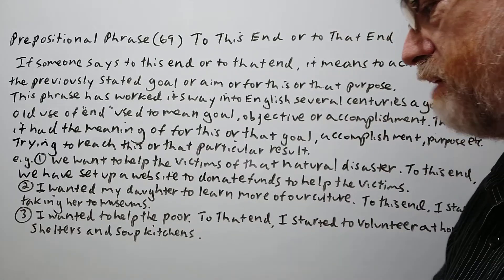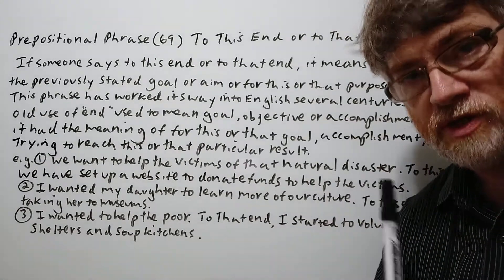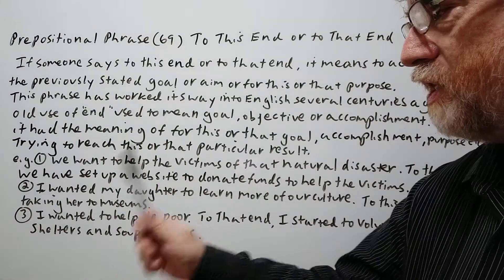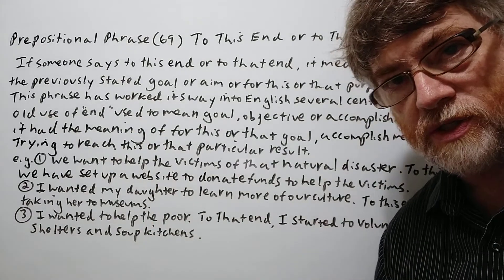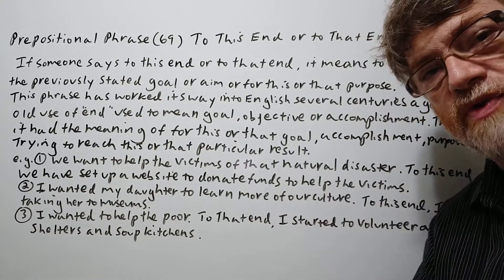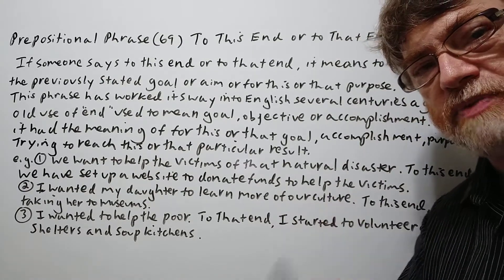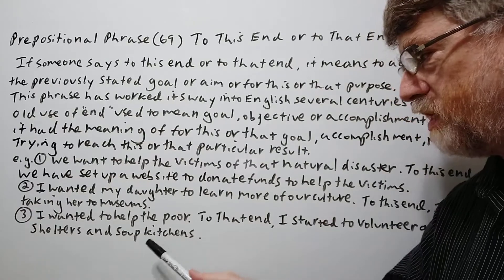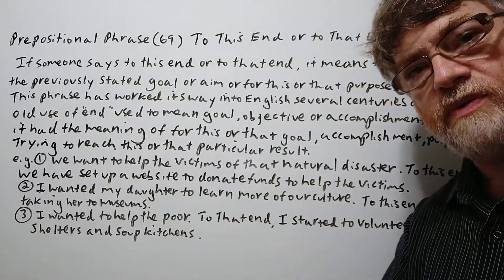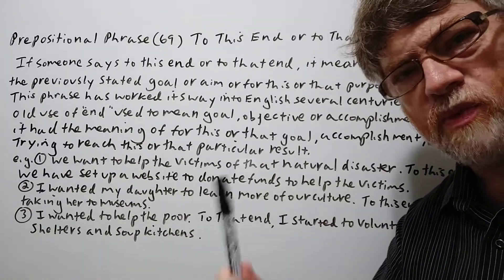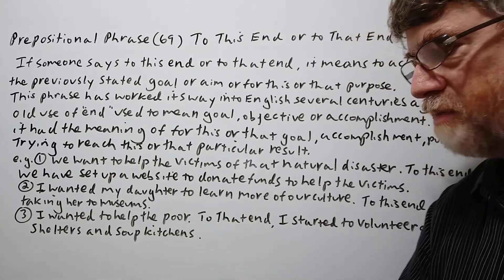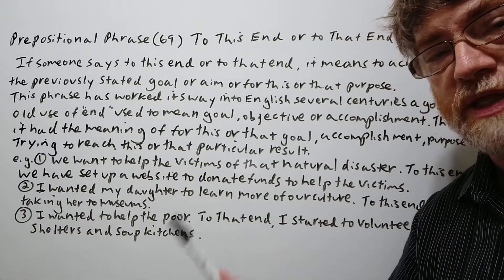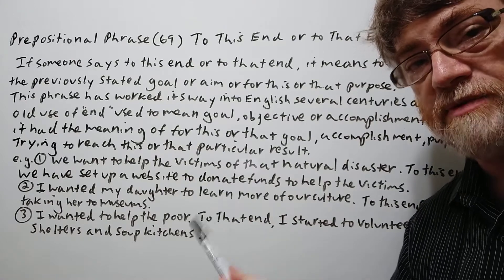The last example: 'I wanted to help the poor. To that end, I started to volunteer at homeless shelters and soup kitchens.' Homeless shelters, of course, are places where people on the street can get shelter at night. A soup kitchen is a place where they offer at least one meal a day to homeless people. It very often used to be soup, which is why they got the name 'soup kitchens.'